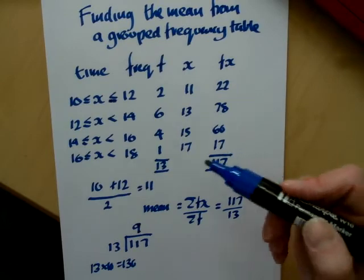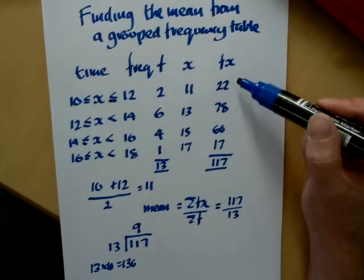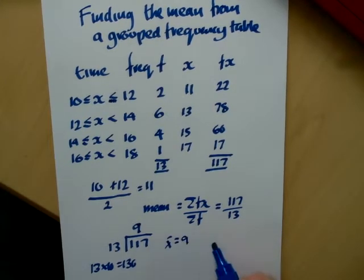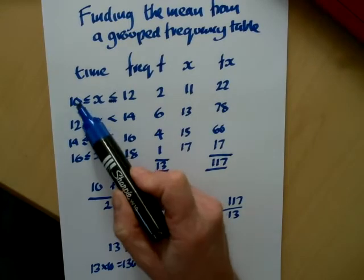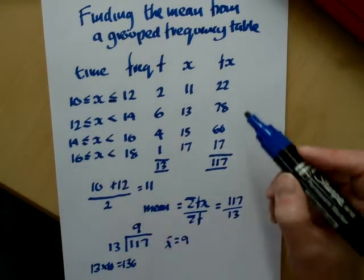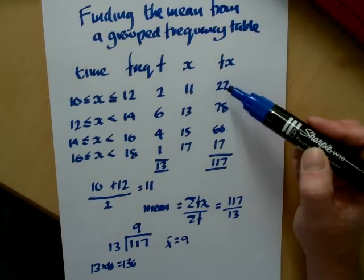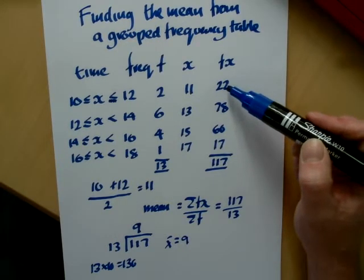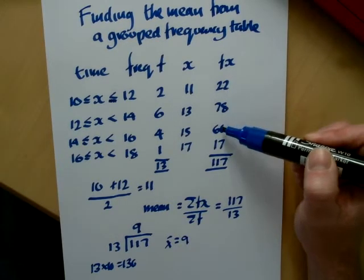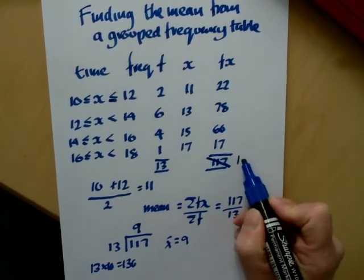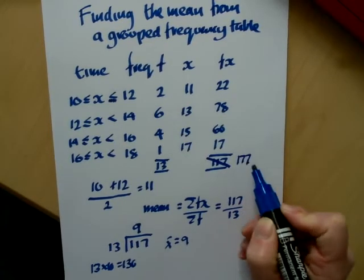So 9 seconds doesn't seem right because none of the times are between 9 seconds. So what we can see is if we look back, I've done 13 into 117 and said the answer is 9. Now that answer cannot be right because the lowest time was 10 seconds. So if I look at my adding up again, and this often happens, you can make one small error even though the method was right. And it was in my adding up, it was 160, 177. So I carried through the wrong answer at that point there, 177.